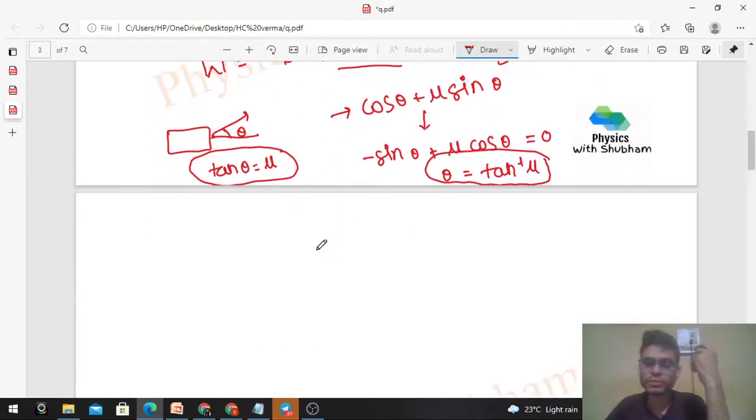Now how to check whether this θ is for maximum or minimum? Take the second derivative: minus cos θ plus μ cos θ times minus sin θ. So minus sin θ will come. This is the second derivative. Check the value of this second derivative at the critical value. At θ equals tan inverse μ, the second derivative will be negative.